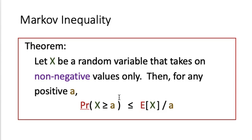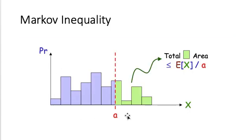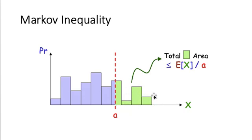Graphically, suppose this is the probability distribution of the random variable X. X may take on different values, and for each of these non-negative values, X will have a certain probability to occur. We are interested in the chance that X is greater than or equal to a. We place a vertical bar at value a, and we are interested in the total area in the green region to the right. We want to show that this total area is bounded by the expected value of X divided by a.